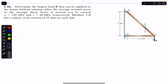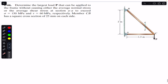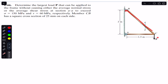The problem asks us to find the largest force P that can be supported by the BC member, where the normal average stress at section AA must not exceed 150 MPa and the shear stress must not exceed 60 MPa. To find this force P, we must first find the relationship between FBC and P.